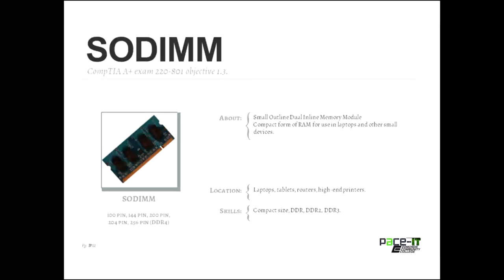Now let's talk about SO-DIMM — Small Outline Dual Inline Memory Module. This is RAM for laptops, sometimes tablets. You will find some SO-DIMMs in high-end routers and high-end printers. It's compact. It also comes in DDR, DDR2, and DDR3 capacities. DDR4 may not be available in SO-DIMM yet.